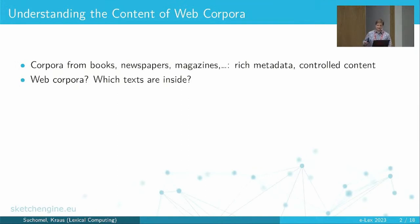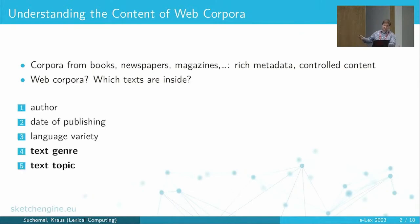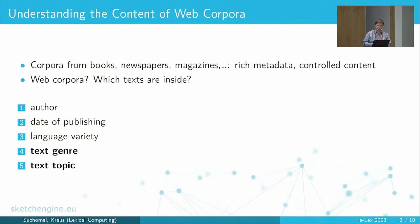As a motivation for our work, we need to understand what's inside web corpora. There are rich metadata in traditional corpora or corpora compiled from known sources like books, newspapers, magazines, or corpora compiled from heavily manually checked data. But that's not the case for web corpora that we make. Our users have been frequently asking which texts are inside — for example, the author of a text, date of publishing, language variety.